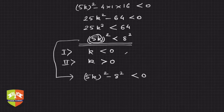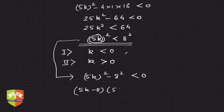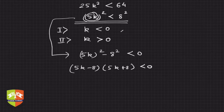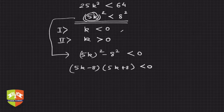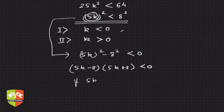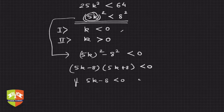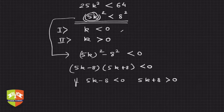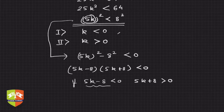So (5k − 8)(5k + 8) < 0. The product of two factors is less than 0, which means if 5k − 8 is less than 0, then 5k + 8 must be greater than 0.